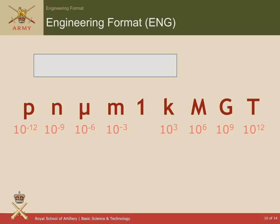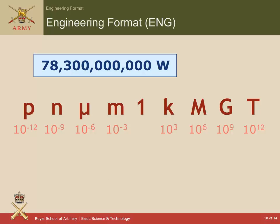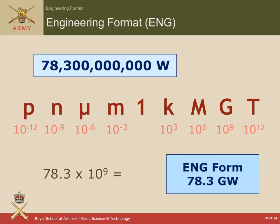Here we've got an even larger number, and we want to convert that to engineering format. When you count the zeros, you realize that you've got 78.3 times 10 to the power of 9, or 78.3 gigawatts. Again, it's much easier to write 78.3 GW than write all those zeros out.